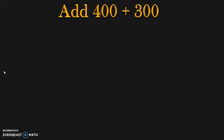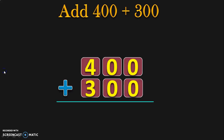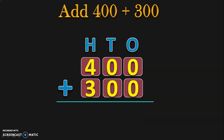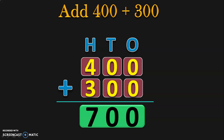Let us do the next example: add 400 plus 300. Both these numbers are three-digit numbers, so write them vertically one below the other. Always write down the place values — 1s, 10s, and 100s. Begin from the 1s place: 0 plus 0 gives you 0. Move to the tens place: 0 plus 0 gives you 0. Then the hundreds place: 4 plus 3 is 7. So 400 plus 300 gives you the answer 700.